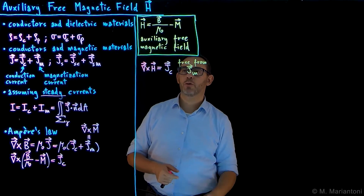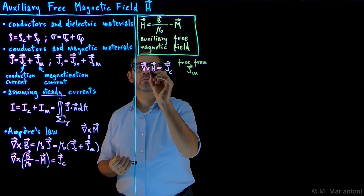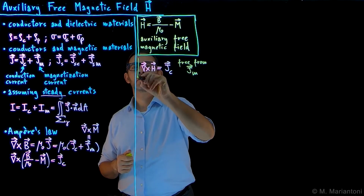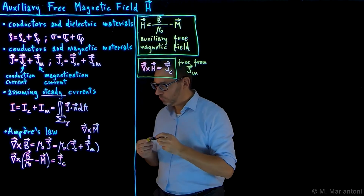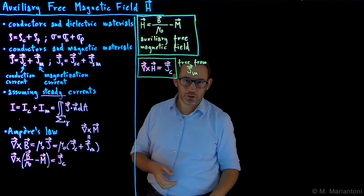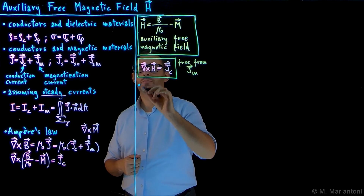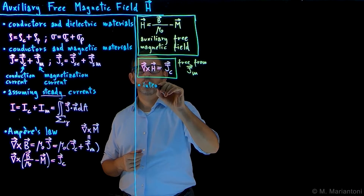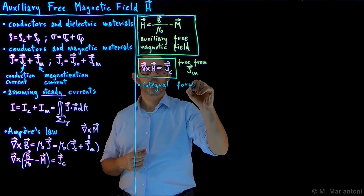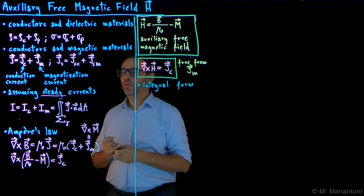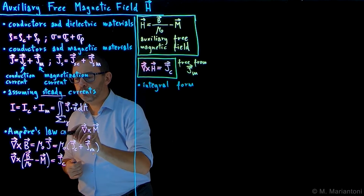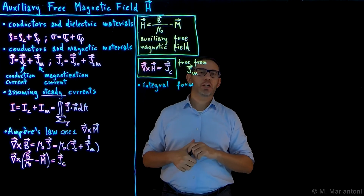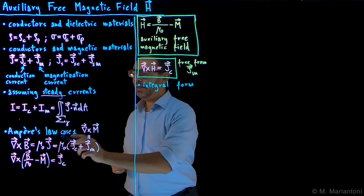On Ampere's law for H, on the right-hand side there is no μ₀, and there is only Jc — only the conduction current — which means this field is free from any magnetization current, and that's why it's useful to define it. This is, in local form differential form, the differential form of Ampere's law for H. We can readily move by Stokes' theorem to the integral form of this equation.